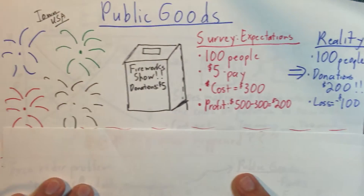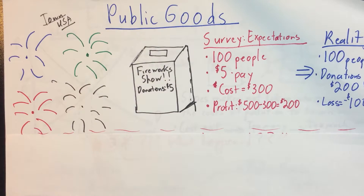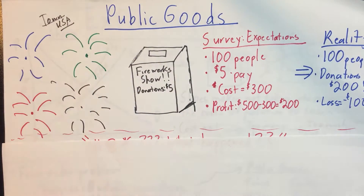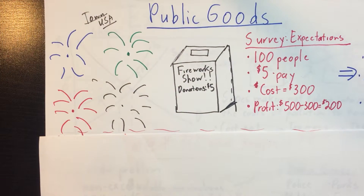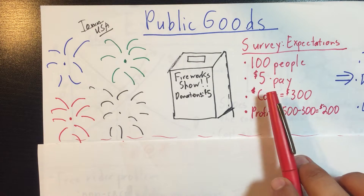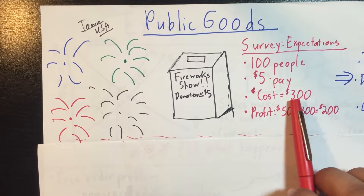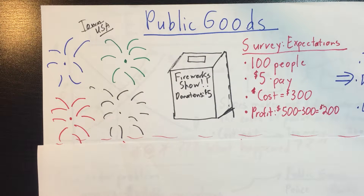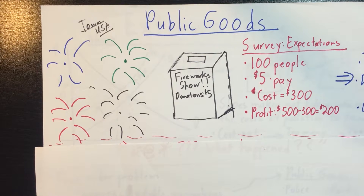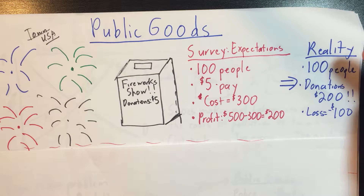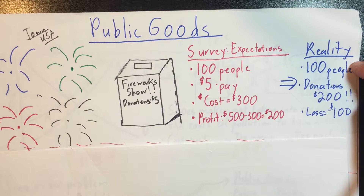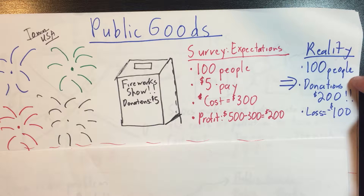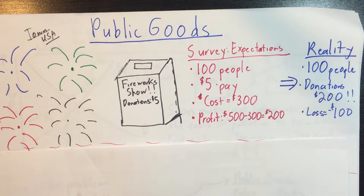Let's dive into public goods. Say you're giving a firework show in your favorite town, Town USA. You survey and find a hundred people are willing to pay five dollars to see your firework show. The cost of fireworks is about three hundred dollars, so you figure you'll make a two-hundred-dollar profit. You put out donation boxes around town, put on the firework show, everybody's happy. But when you open up the donation boxes, you only got two hundred dollars in donations — you lost a hundred dollars.